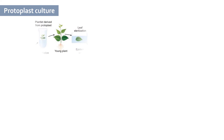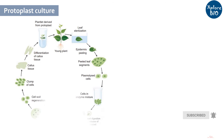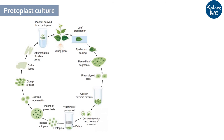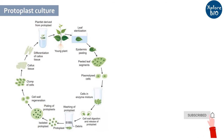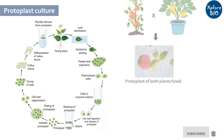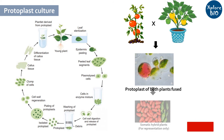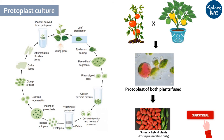A cell without a cell wall is known as a protoplast. Tissues like leaf are harvested and treated with cell wall-degrading enzymes to obtain protoplasts. Protoplasts serve as useful explants for protoplast fusion and development of somatic hybrids.